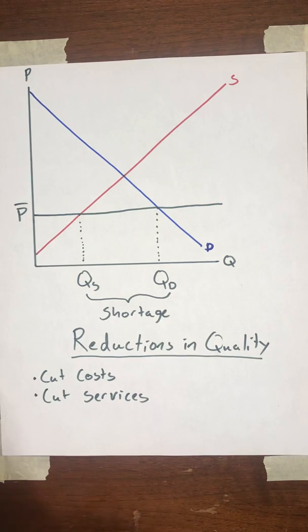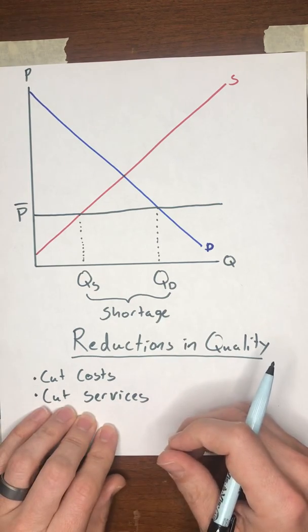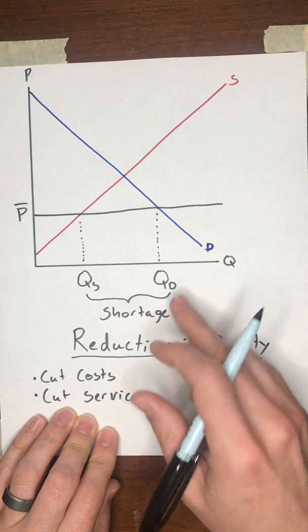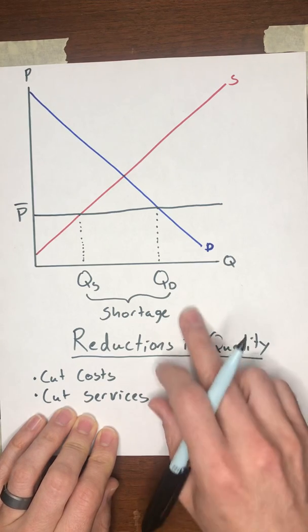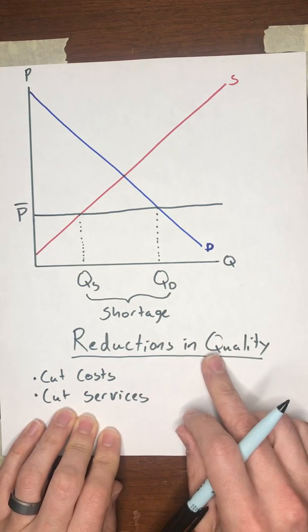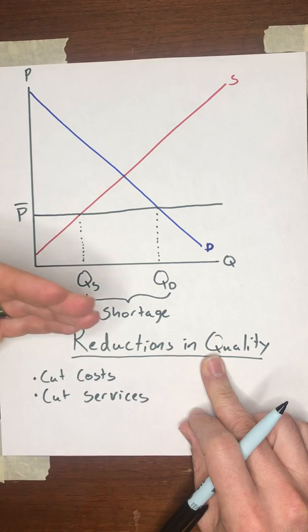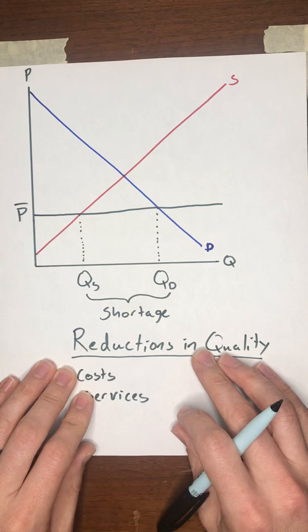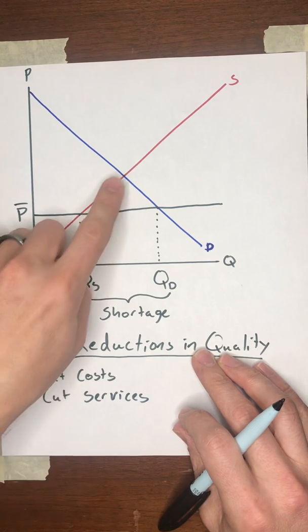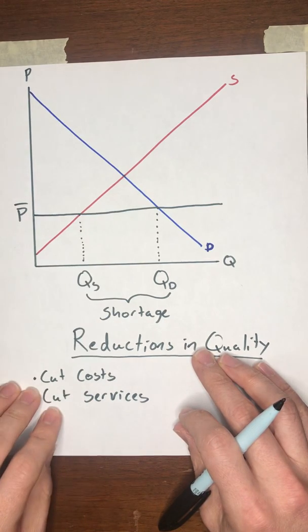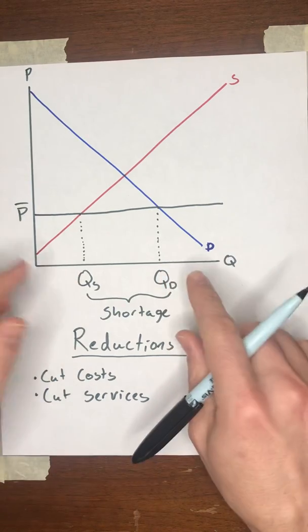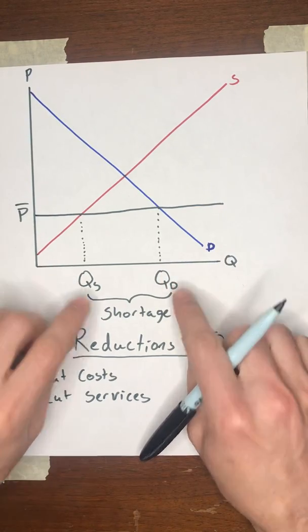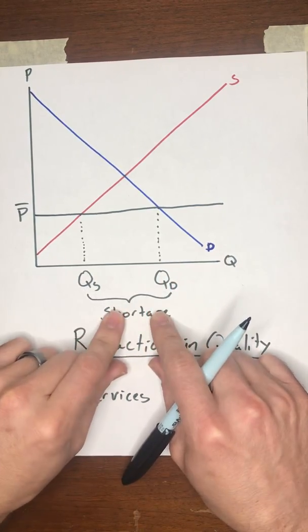Now, why can you get away with this when you are a seller? I mean, you could say, well, hold on a second. If I'm cutting the value of my product, the quality of my product, or I'm cutting services, that's going to put me at a competitive disadvantage relative to the other firms in this market. And under ordinary circumstances in equilibrium, that would be true. But here's the issue, or here's what allows you to get away with that. You have a shortage of goods in this market.